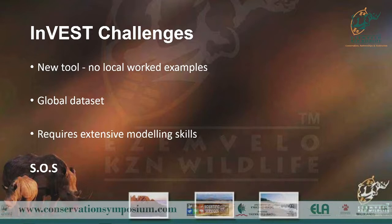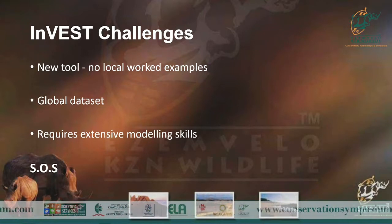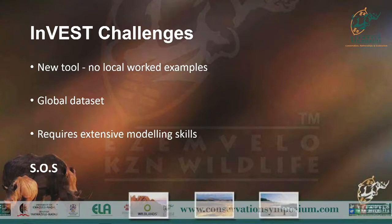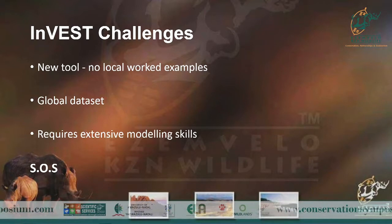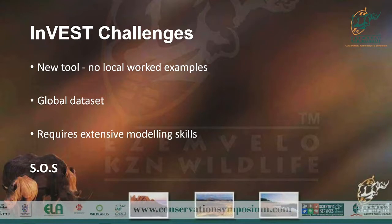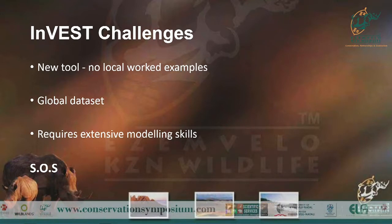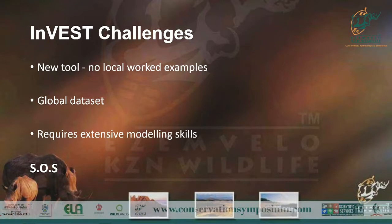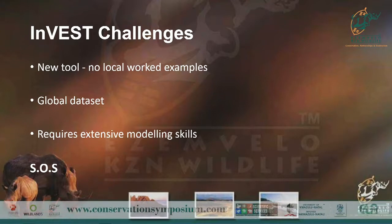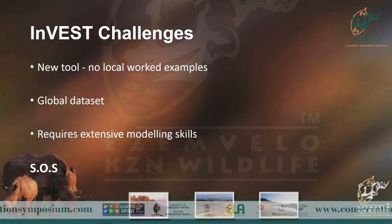The problem with InVEST is that it's a new tool. I don't have predecessors I can go to and ask what they found or how they resolved errors. Another problem could be that the model uses a global dataset — it's mainly designed for remote areas that don't have data, so you need to be connected to the internet as it pulls information from the web. I think maybe my scale is too small. It also requires extensive modeling skills because when these errors come up, they're not even in plain English.